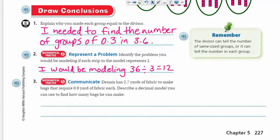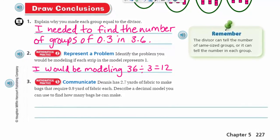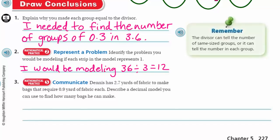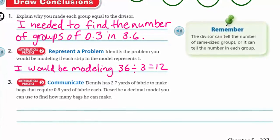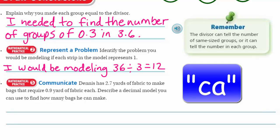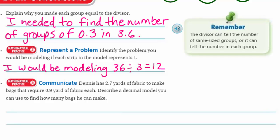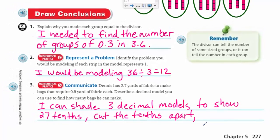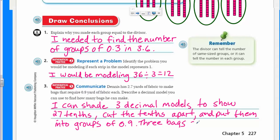So communicate: Dennis has two and seven-tenths yards of fabric to make bags that require nine-tenths yard of fabric each. Describe a decimal model you can use to find how many bags he can make. This is just like our problem above, just with different numbers. I could shade three decimal models to show 27 tenths, cut the tenths apart and put them into groups of nine-tenths. Three bags can be made.